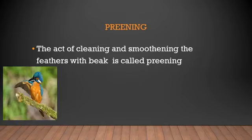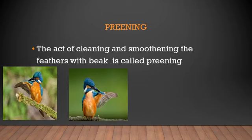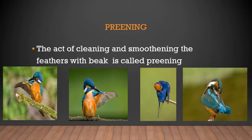The act of cleaning and smoothening the feathers with the beak is called preening. Here are four images where you can see a kingfisher cleaning and smoothening its feathers. It has to occasionally keep doing this so that its feathers are clean and ready to use whenever needed.